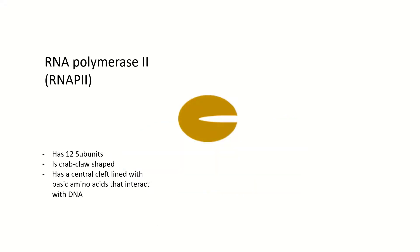RNA polymerase 2, abbreviated RNAP2, is composed of 12 subunits. The overall structure of RNAP2 is crab claw shaped, and the central cleft is lined with basic amino acids that interact with DNA.